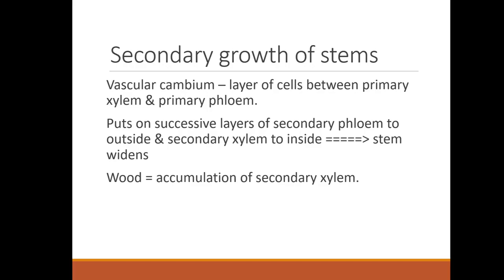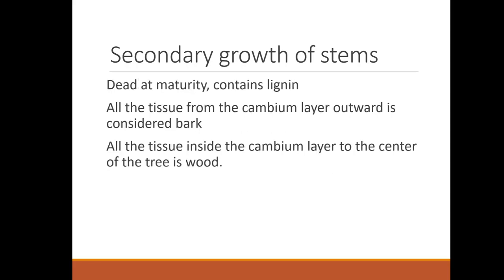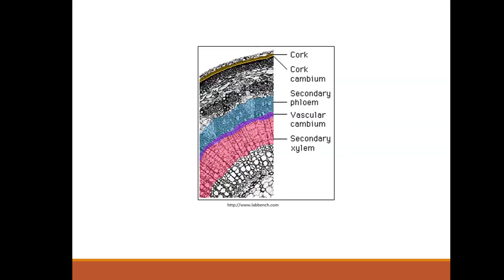Wood is the accumulation of secondary xylem. It's dead at maturity and contains lignin, which is the hard part of the wood. All the tissue from the cambium layer outward is considered bark. All the tissue inside the cambium layer to the center of the tree is wood. You can see the vascular cambium between the secondary phloem and the secondary xylem in a cross-section.